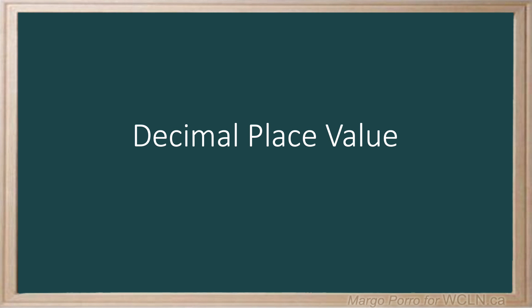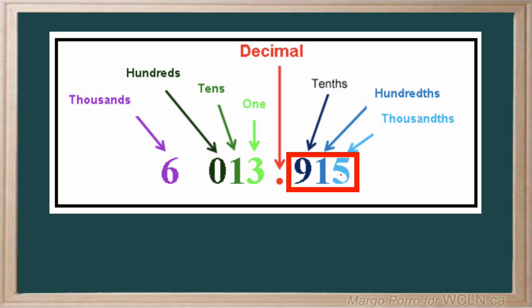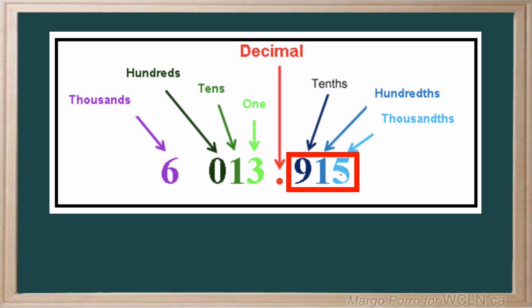In addition to our regular whole number place values, digits that follow the decimal represent fractional numbers or numbers that are less than one.